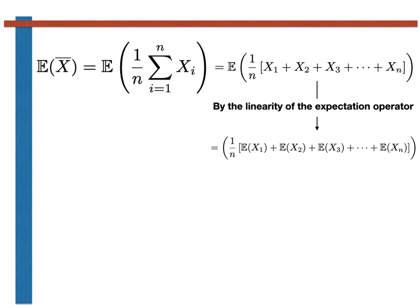Next, note that all the random variables we've added together are identically distributed. They thus all have the same expectation, which we will call mu. As there are n random variables in the sum, we can thus rewrite this whole expression as n times mu. Now note that the n's in the numerator and the denominator cancel. We thus find that the expectation of the sample mean is equal to the expectation of the distribution that was repeatedly sampled to construct it.